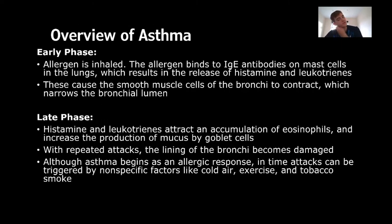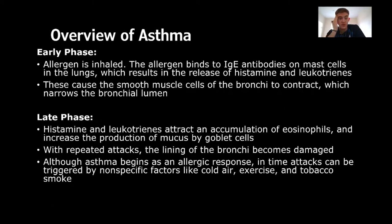In the early phase of asthma, when an allergen is inhaled, it binds to IgE (immunoglobulin E) secreted by T-lymphocytes. IgE then binds to mast cells in the lungs, resulting in the release of histamines and leukotrienes. This causes smooth muscle cells of the bronchi to contract, narrowing the lumen and therefore causing difficulty breathing.